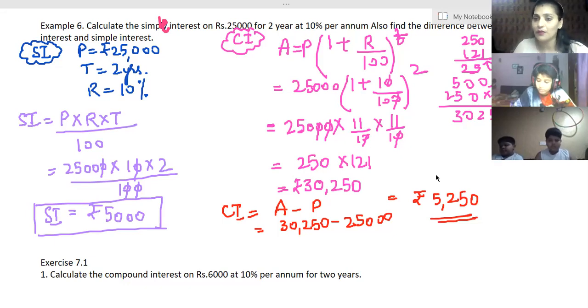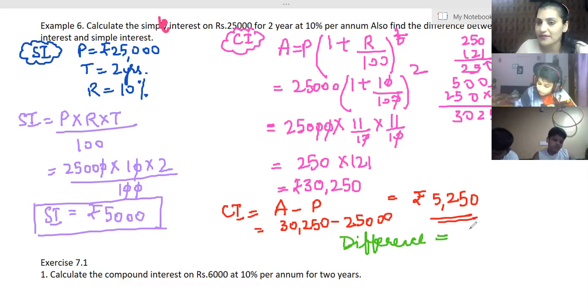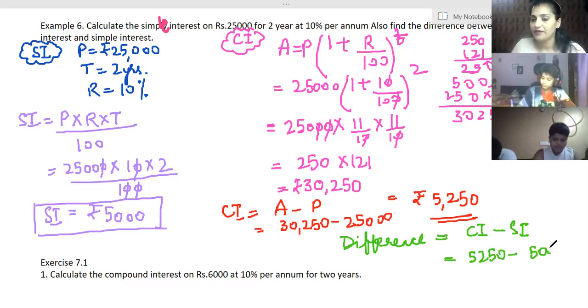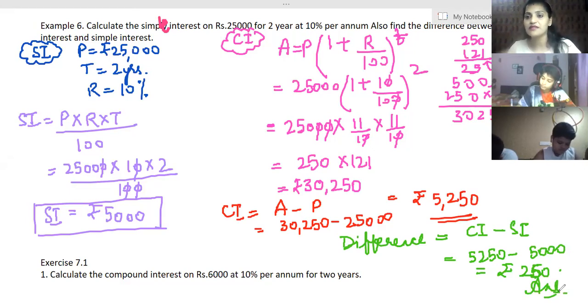Now, do you think our question is complete? No, it's still not completed because we have to calculate the difference. So let's do it. Difference of what? Compound interest minus simple interest. Why have I not written simple interest minus compound interest? Because it is a known thing that compound interest is always greater in value if your rate of interest, time period, and principal are the same. So let's subtract this: 5,250 minus 5,000. The difference is 250. So I am getting 250 rupees more interest, okay?